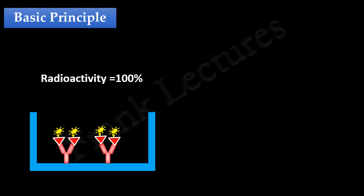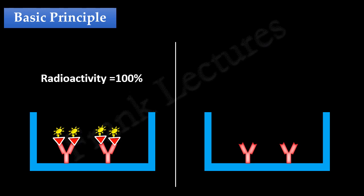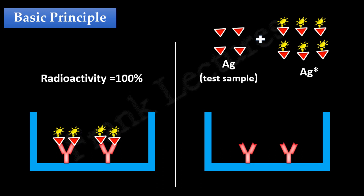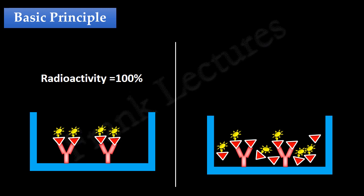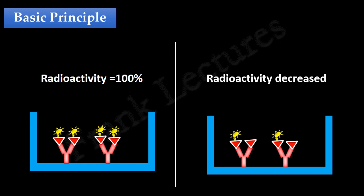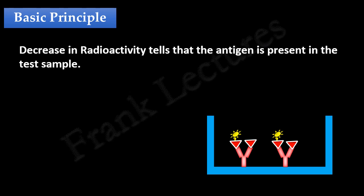Now in a second microtiter well, we again take the same amount of immobilized antibody. But this time, we add unlabeled antigens along with the previous fixed amount of radiolabeled antigen. Note that the antibodies present in the well have the same affinity for both the labeled and unlabeled antigen, since both antigens are the same. Therefore, these antigens will compete with each other for the antigen binding sites, and some of the antigen binding sites will be occupied by the unlabeled antigen. After binding takes place, the well is rinsed to remove any unbound antigens. If we now measure the radioactivity of this well, it will not be 100% — it will decrease because the unlabeled antigens have replaced some of the radiolabeled antigens. Decrease in radioactivity tells us that the antigen is present in the test sample.